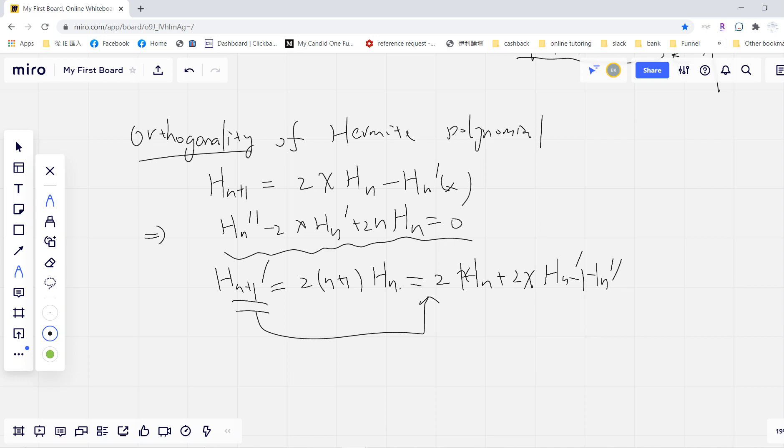And by the recursion relation, we have this. So combined, obviously, we have this. Okay, so we have H_n'' minus 2xH_n' plus 2nH_n is zero.